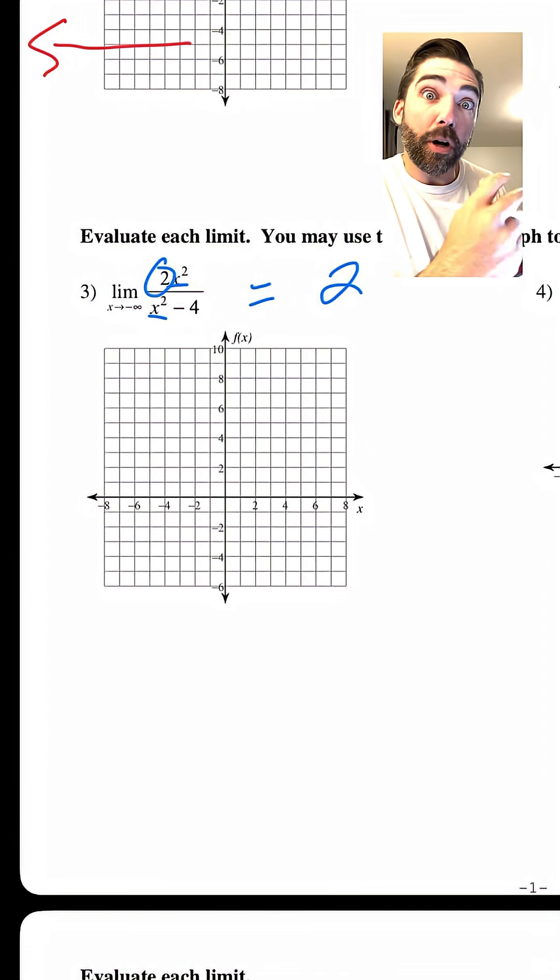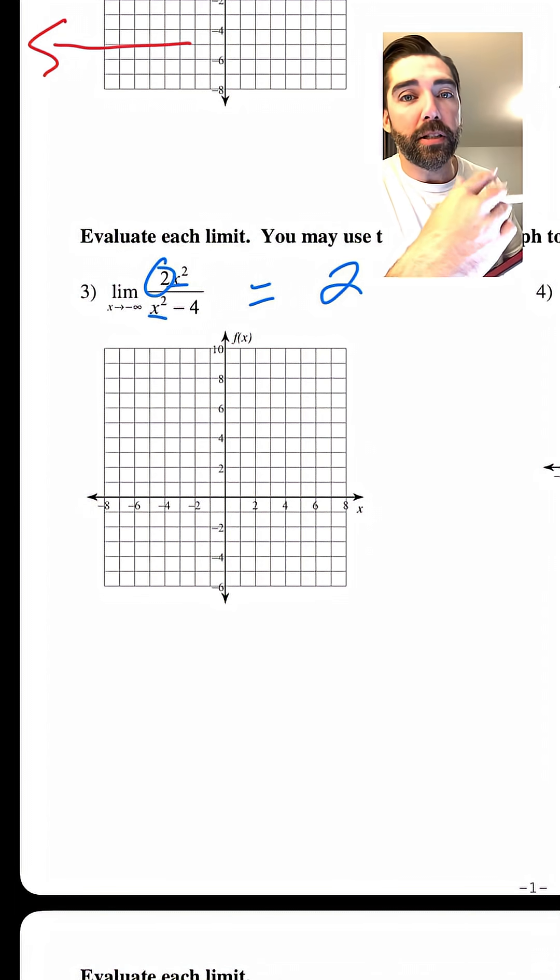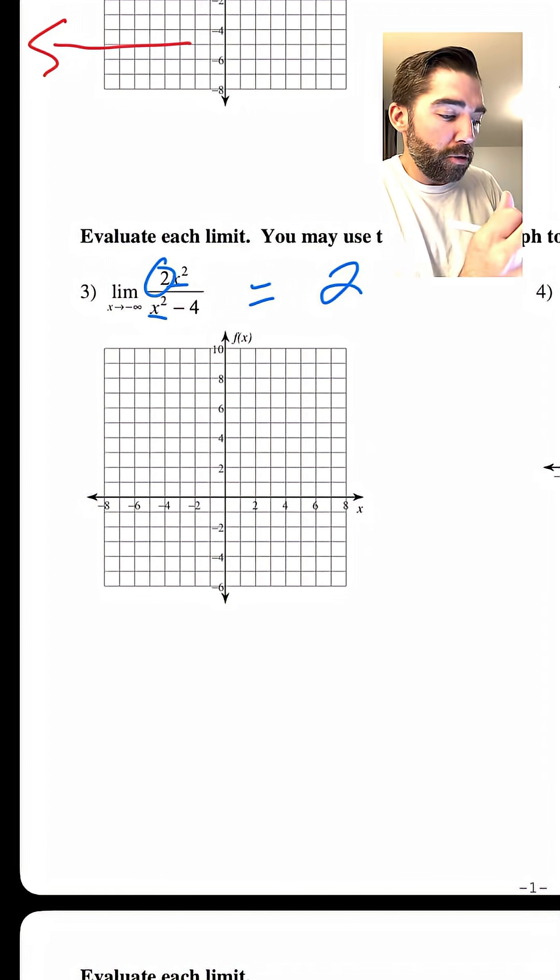X squared and X squared, so 100 million squared, negative 100 million squared is going to be really big, but that two is always there. So it's just two.